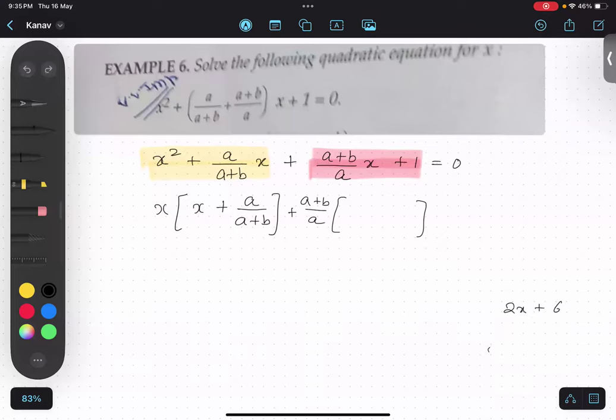So when we say 2 common, we actually divide both the numbers by 2. That's how we get x plus 3. Make sense? So similarly, if I am taking a plus b upon a common, that means I am dividing this by a plus b upon a. So this and this getting cancelled. So I get x over here.